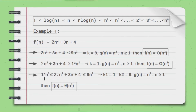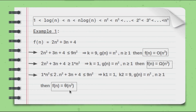Now we have 1·n² ≤ f(n) ≤ 9n². For the tight bound, k₁ = 1 and k₂ = 9, and since we have n² on both sides, we take g(n) = n² for all n ≥ 1. Therefore the tight or average bound — Theta — is Theta(n²).